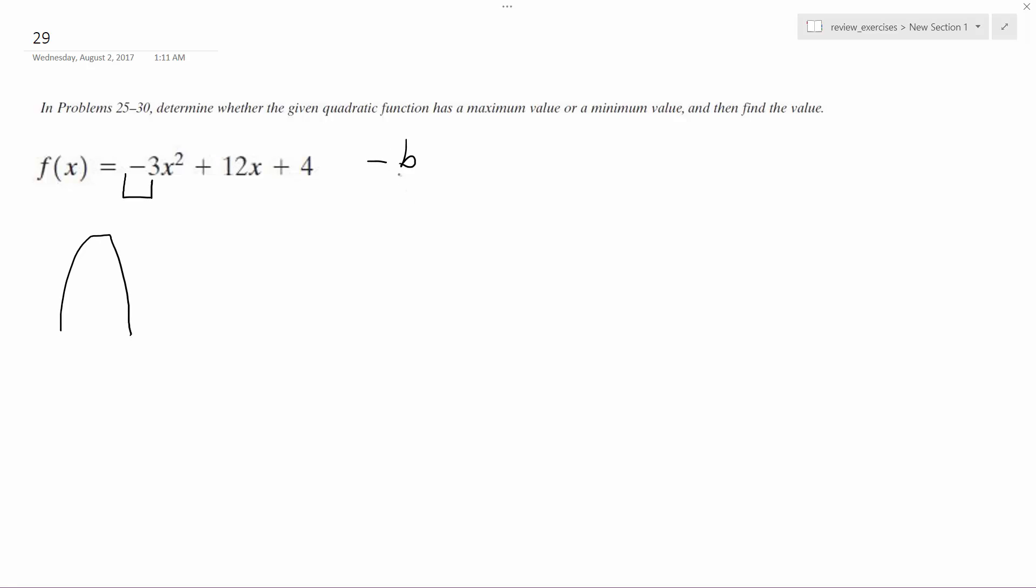So we're going to use the formula to find the vertex location, or the axis of symmetry, so opposite of b over 2a. This is going to be negative 12 over 2 times negative 3, which gives me negative 12 over negative 6, which is 2.